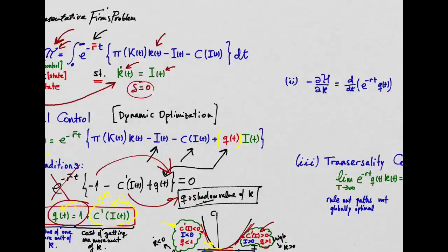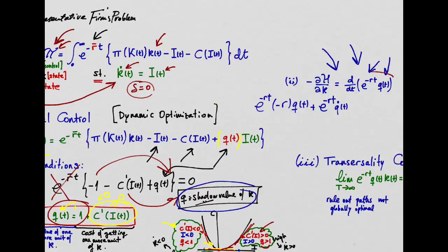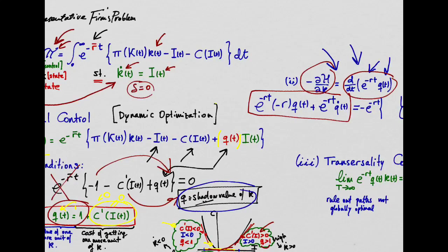Now for the second optimality condition, we equalize minus the derivative of the Hamiltonian with respect to our state variable K to the derivative with respect to time of the discount factor times the multiplier Q, which is the shadow value of capital.